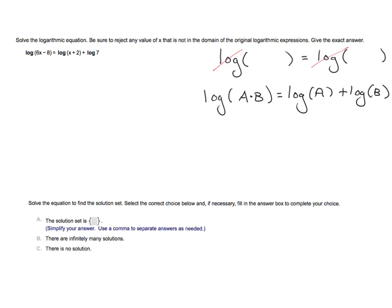This is what my equation becomes. I'm doing nothing to the left, it is log of six x minus eight. However, on the right, that is log of x plus two times seven.